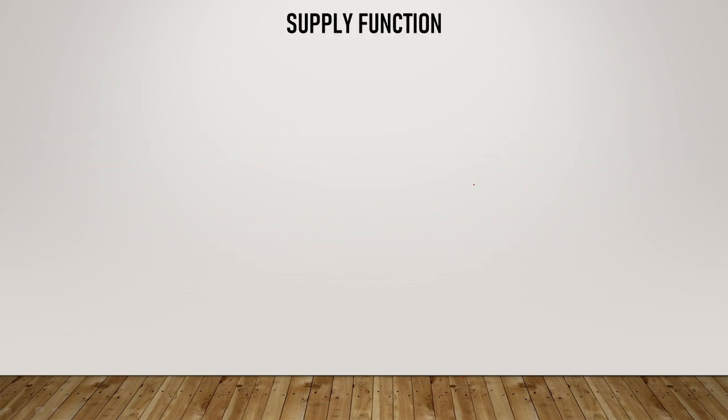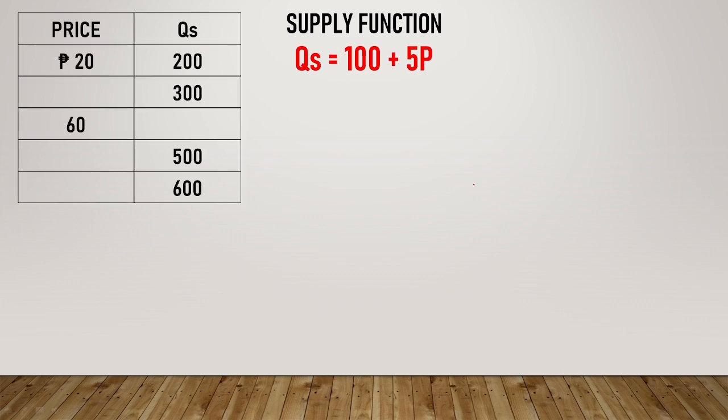To put into practice, this is the supply function example. A is the value of Qs if the price is zero. Let's say for example this supply function: we have Qs = 100 + 5P, and we have the table here. So pause the video for a while and then answer the table and fill in the blanks.